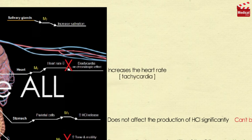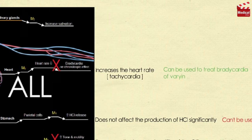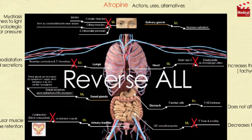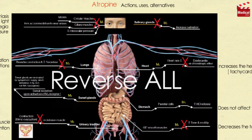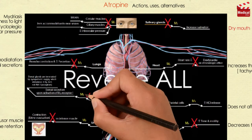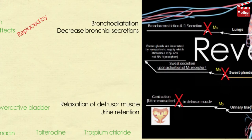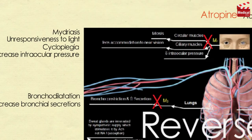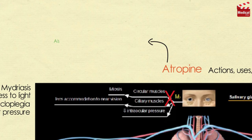Atropine increases the heart rate — known as tachycardia — so it can be used to treat bradycardia of varying etiologies. It blocks muscarinic receptors in the salivary glands producing dryness of the mouth, and also decreases secretions of sweat and lacrimal glands. Inhibition of sweat gland secretion can elevate body temperature, which is dangerous especially in children.